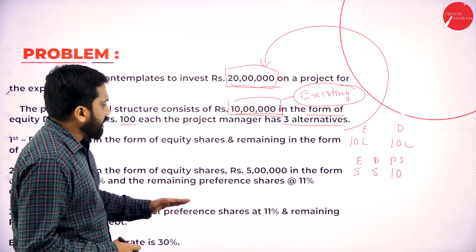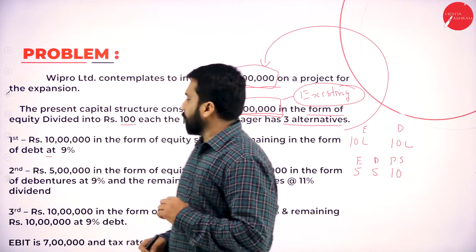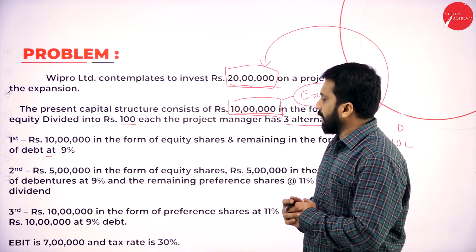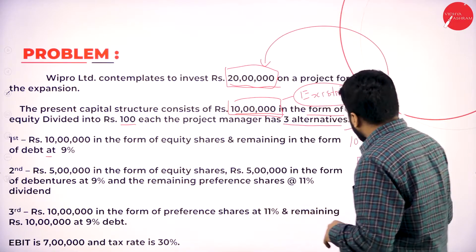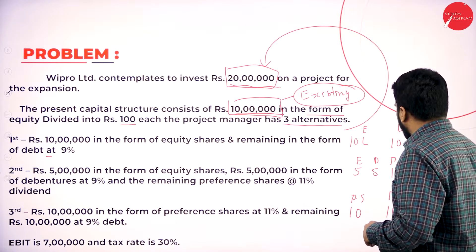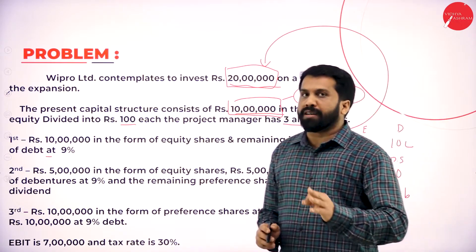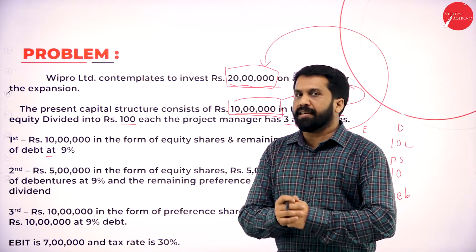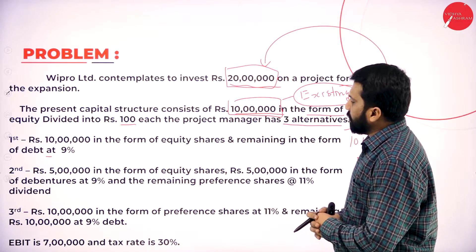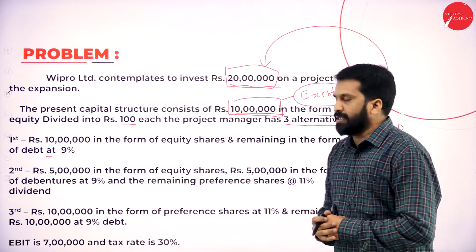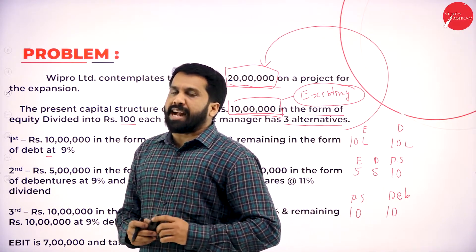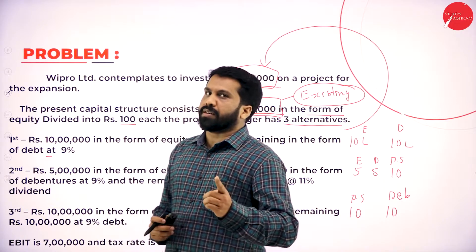And the last one: 10 lakh in the form of preferences and remaining 10 lakh in the form of debenture. EBIT is rupees 7 lakh and the tax rate is 30%. What is the EBIT? We have 7 lakh. What is the tax rate? We have 30%.